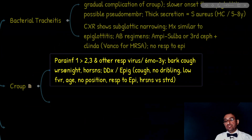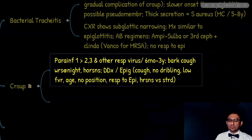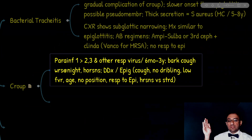The age that helps distinguish croup from epiglottitis is six months to three years. Symptoms that help distinguish it from epiglottitis include barking cough that is worse at night, plus hoarseness. In epiglottitis, we have drooling, tripod or sniffing position, and stridor. In croup, there is no drooling, the fever is usually low — so the kid is not toxic — and there is usually no specific position the child adopts.